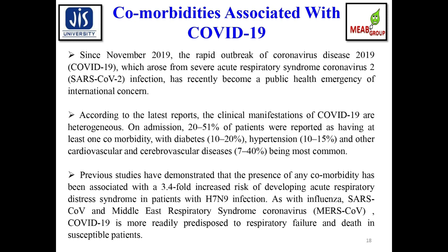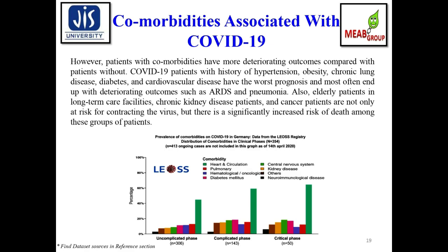Previous studies demonstrated that the presence of any co-morbidity was associated with a 3.4-fold increased risk of developing acute respiratory distress syndrome in patients with H1N1 and H7N9 infection. Similarly, SARS-CoV, MERS-CoV, and COVID-19 more readily predispose to respiratory failure and death in susceptible patients. However, patients with co-morbidities have more deteriorating outcomes compared with those without.